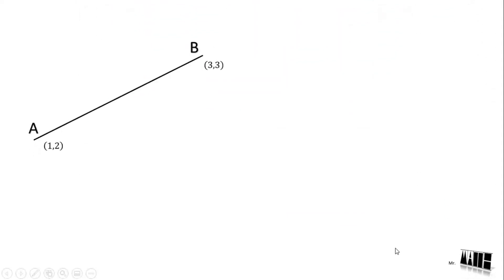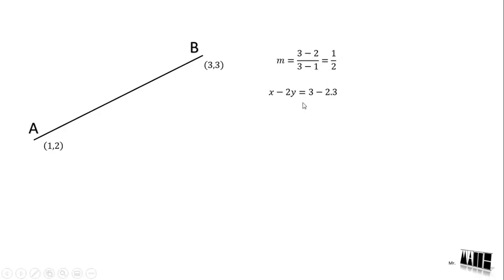There are two points given. Using the given conditions, the equation becomes: 3 minus 2 into 8, 3 minus 1 equal to half. So the equation is 1 into x minus 2 into y equal to 1 into 3 minus 2 into 3.